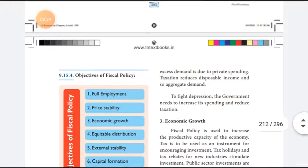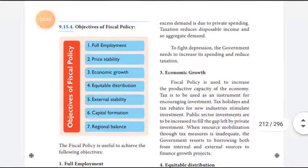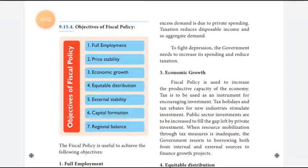Objectives of fiscal policy. There are seven types in the objectives of fiscal policy. The first one: Full Employment. The second: Price Stability. Third: Economic Growth. Fourth: Equitable Distribution. Fifth: External Stability. Sixth: Capital Formation. And seventh: Regional Balance.